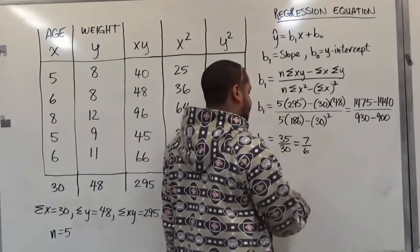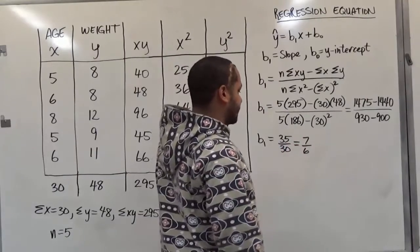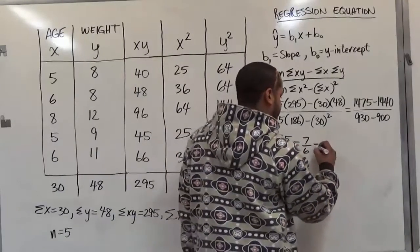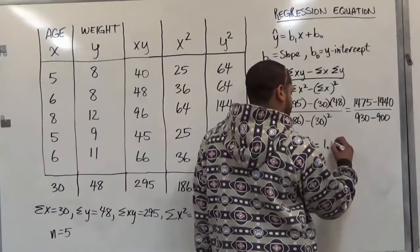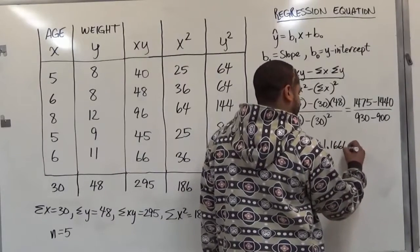So here our b1 is going to give us 1475 minus 1440, that's going to be 35. And on the bottom here in the denominator, we have 930 minus 900, which is just 30. When we divide these two, we see they have common factors, and this can be reduced. So it's 7 over 6. And dividing this, we're going to get a repeating decimal.